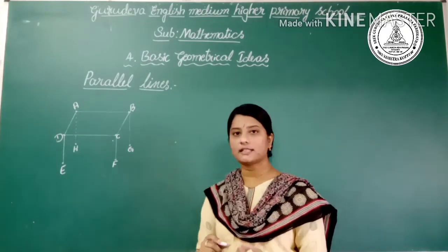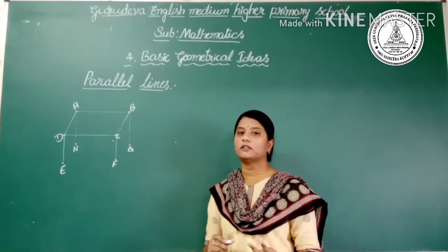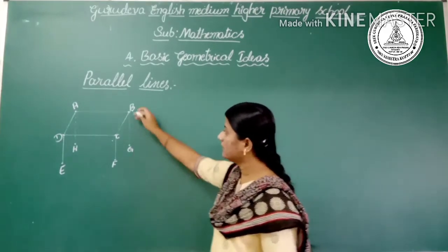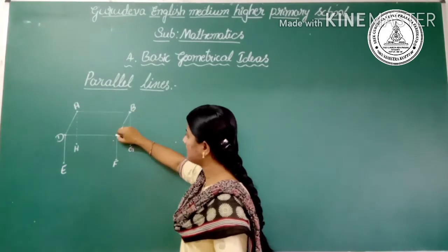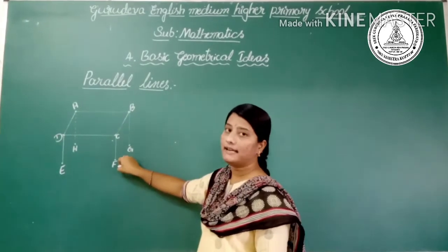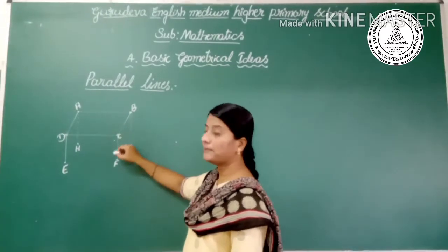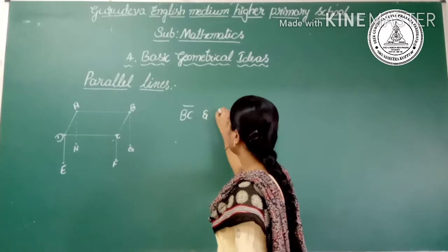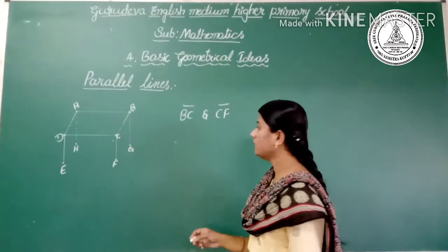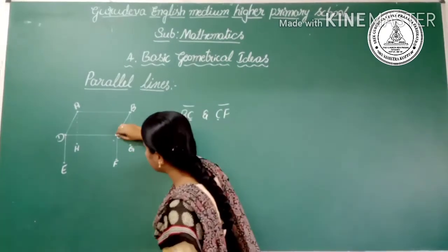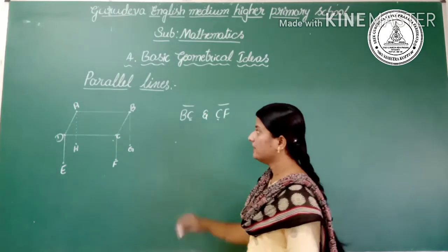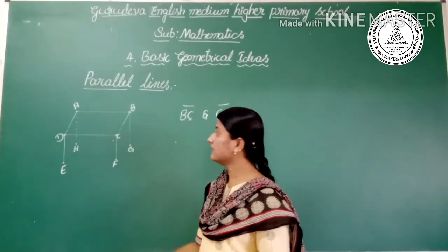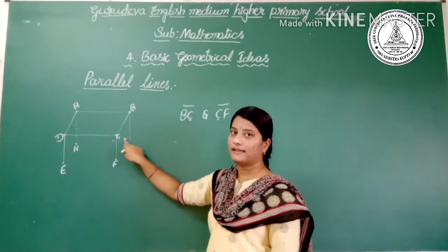Can you identify the intersecting lines here? Two lines which pass through a common point are called intersecting lines. Here the two line segments BC and CF intersect at the common point C. So we can say that BC and CF are intersecting lines, with C as the intersecting point.